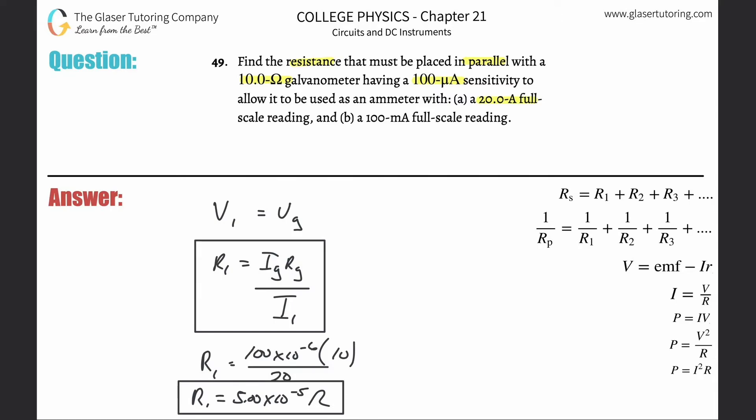Letter b now says the full scale rating is changing to 100 milliamps. So basically instead of the 20 down there, just plug in the milliamps, but be careful, you need that in amps so multiply it by 10 to the minus 3, and then simply redo the calculation. So 100 times 10 to the minus 6 times 10 divided by 100 times 10 to the minus 3.